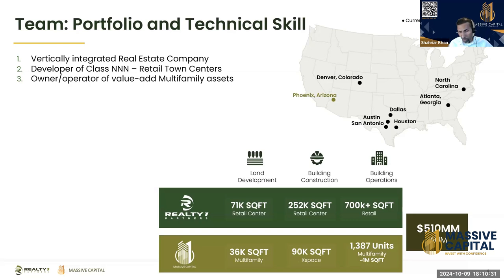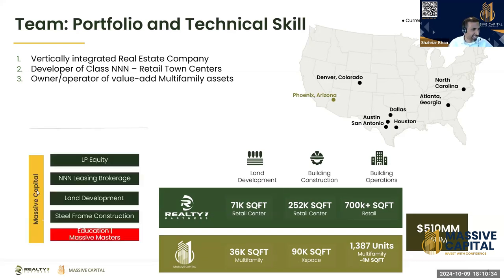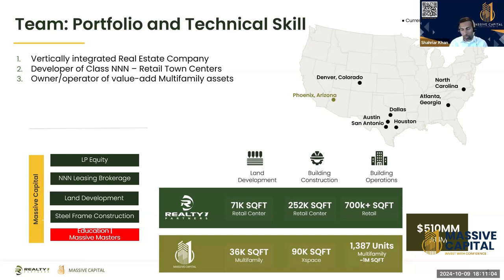Between Realty One and us, we have a little over half a billion dollars in assets under management — we're inching toward $550 million right now. We raise equity from LP investors and family offices, and we have partnerships that fund us. We have a triple net leasing brokerage arm with five full-time employees focused solely on triple net leasing. We do land development and steel frame construction in-house, and we have Massive Masters, our education platform that teaches people how to become sponsors of commercial deals or stronger passive investors.